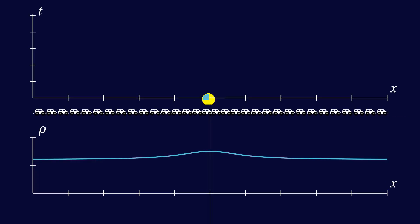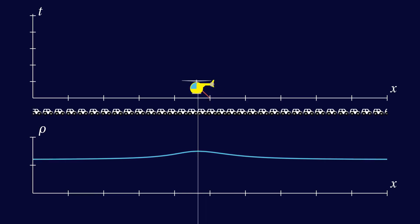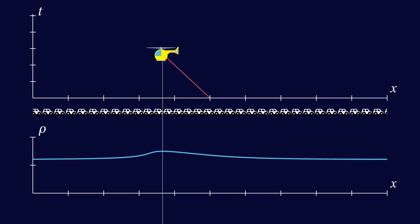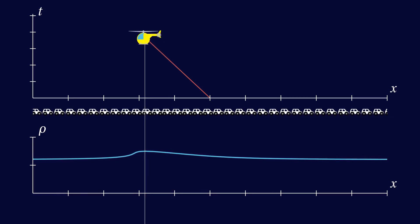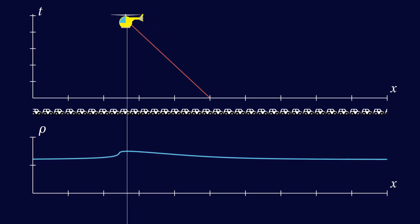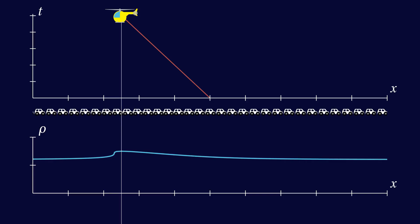Imagine a helicopter flying over the densest bit of traffic. It does not follow an individual car, it follows a wave in traffic. A spacetime plot of the helicopter's trajectory is called a characteristic. It is a line formed of points in spacetime, which all have the same traffic density.